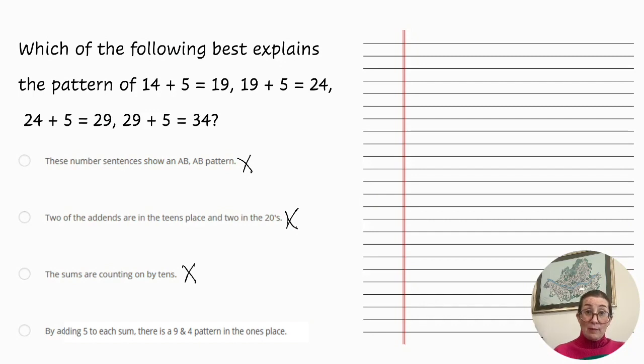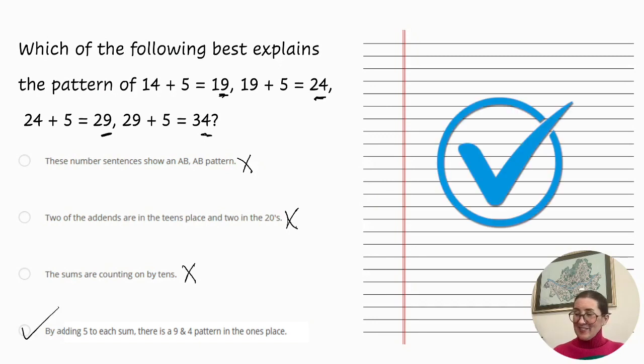By adding 5 to each sum, there is a 9 and 4 pattern in the 1s place. This is correct. So we can see that in the 1s place goes 9, 4, 9, 4. So that is our correct answer.